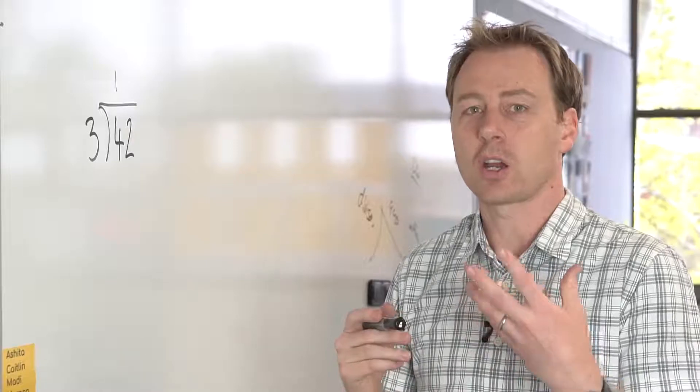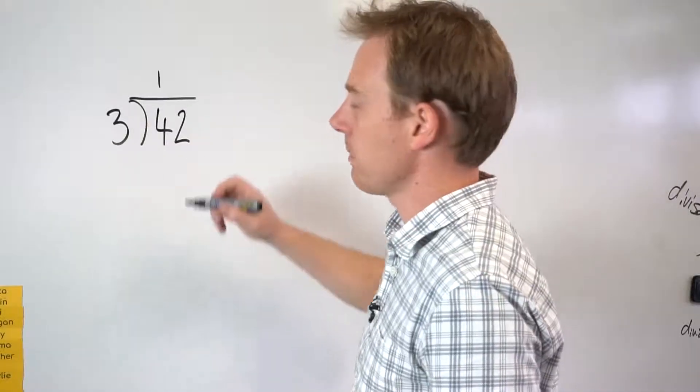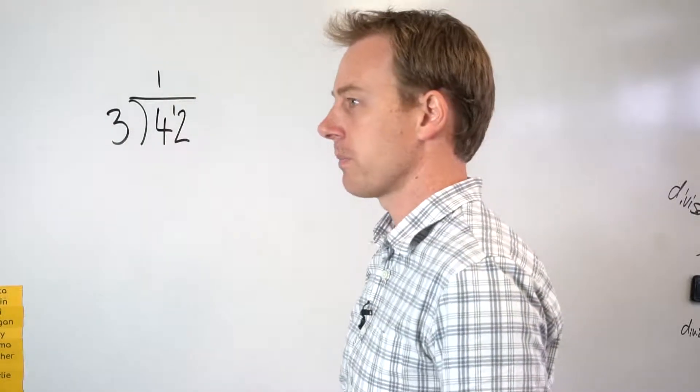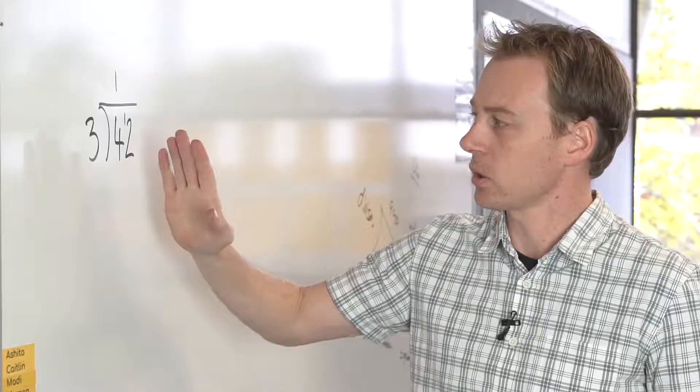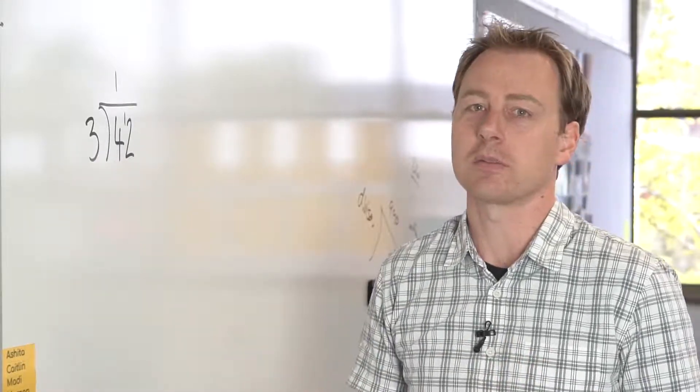everyone will get 1 and there's going to be 1 left over. That leftover was in the tens column and I'm going to move it into the ones column as 10 ones. So it's gone from tens into ones. That's the process of regrouping.